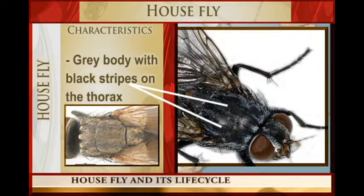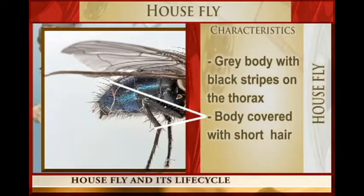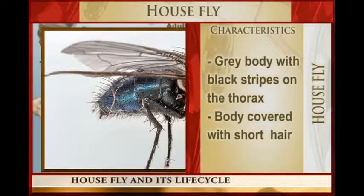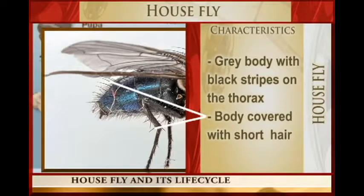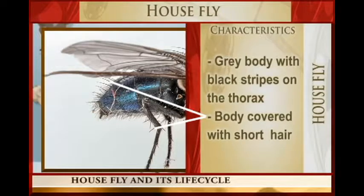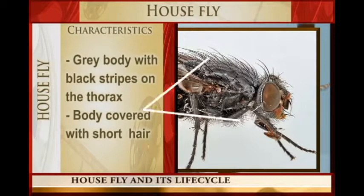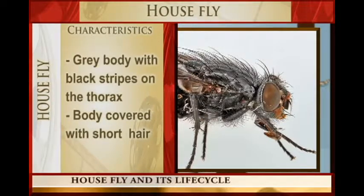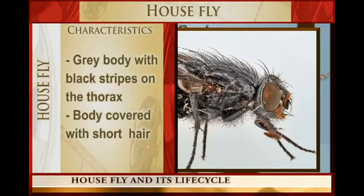The body is covered with short hair. Almost every part of the body, if you look at it, is covered with hair — the abdomen, the legs, and the thorax. It has a hairy body. There are short hairs on each part of the body.